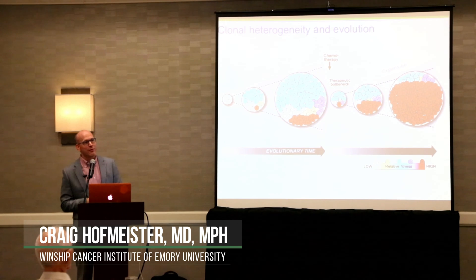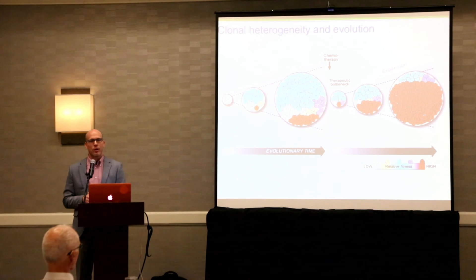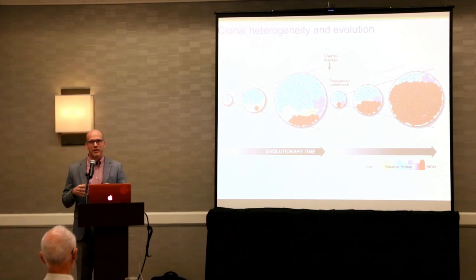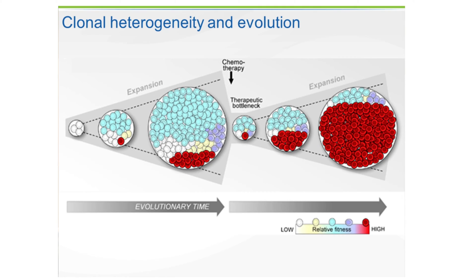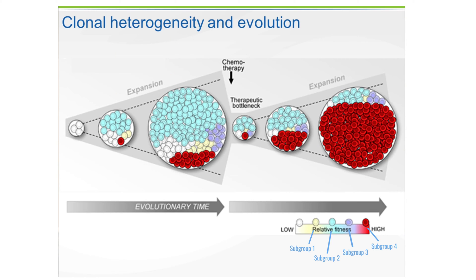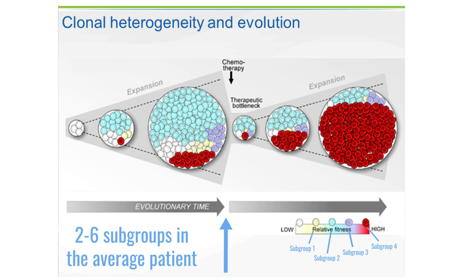Clonal heterogeneity and evolution — this sounds really complicated, but it's something most of you already knew. At the time of diagnosis, there are two to six tribes of myeloma in the average patient, with different genetics and different responses to drugs — basically somewhat different diseases. This is all under the cover of the same IgG lambda monoclonal protein, so that monoclonal protein is made up of output from two to six different tribes of myeloma cells.